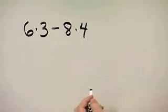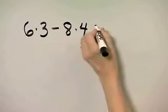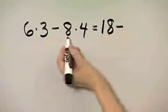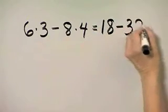So let's multiply from left to right. That would be 6 times 3 is 18 minus 8 times 4 is 32.